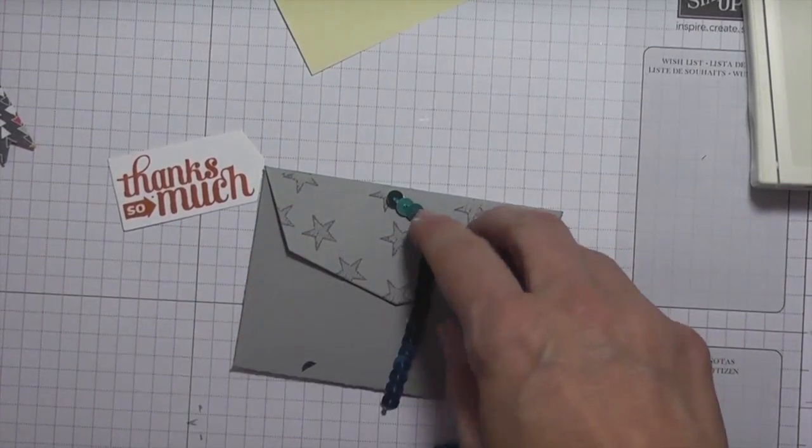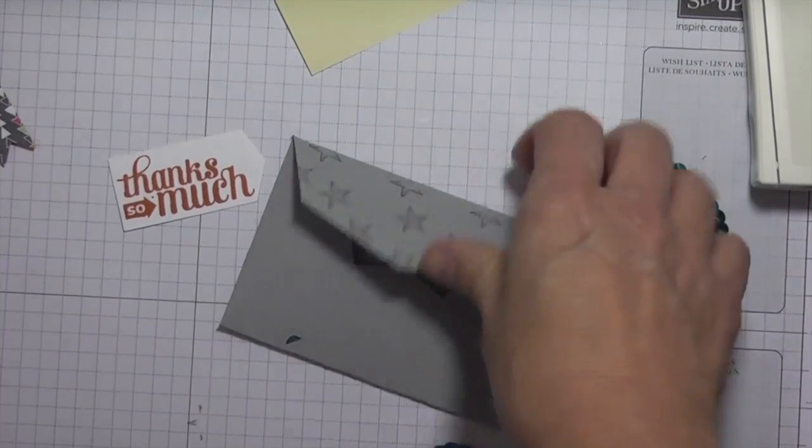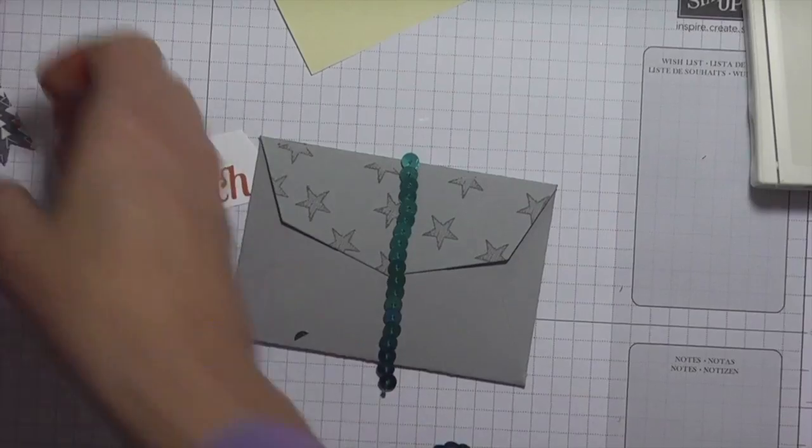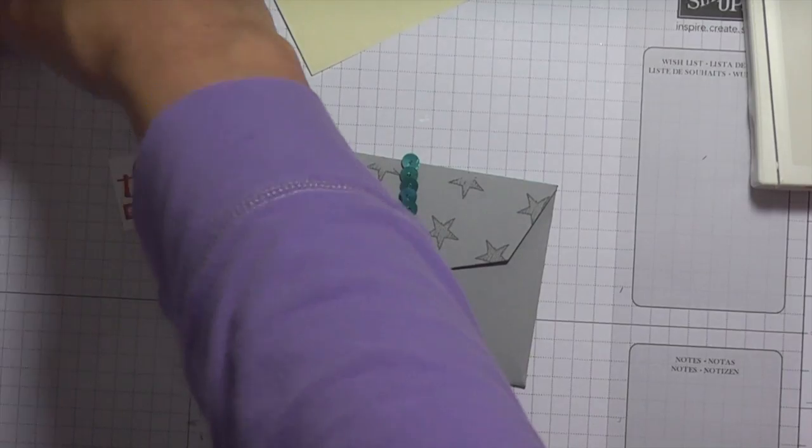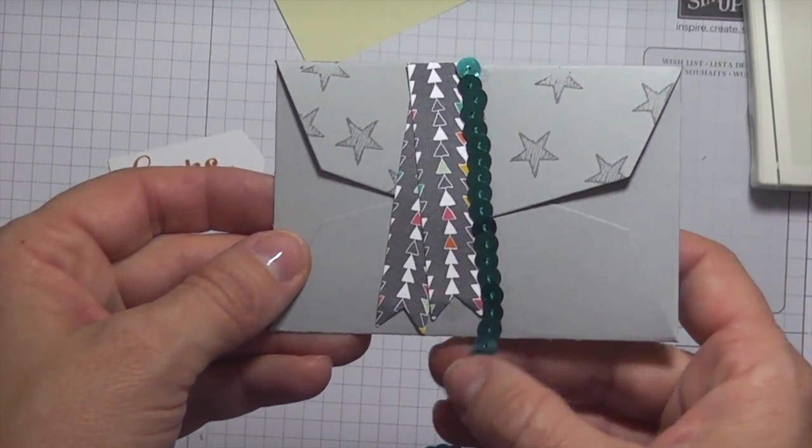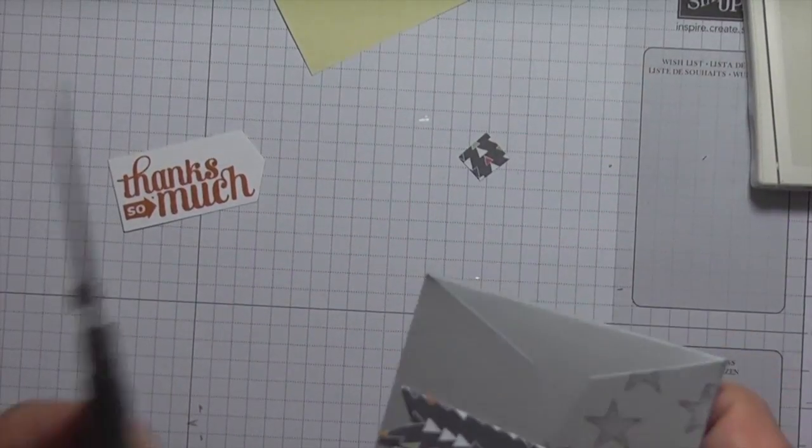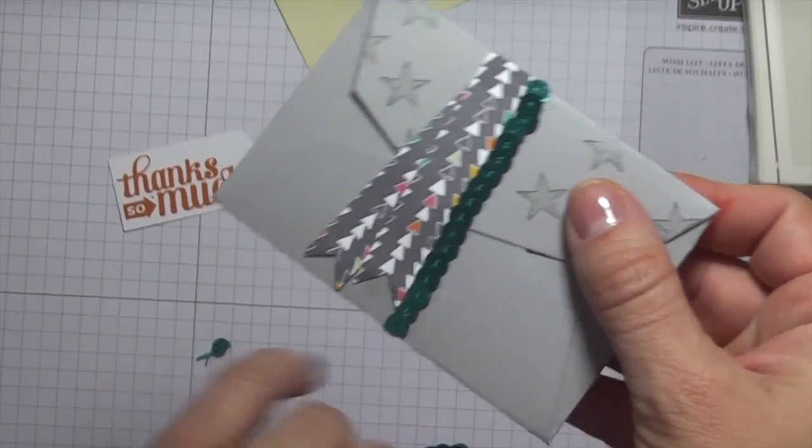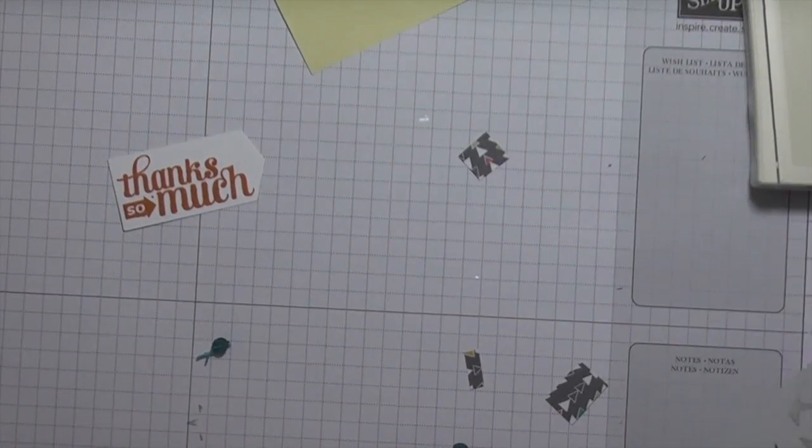I'm going to use my crystal effects and just put a thin line of glue on the front. Then I'm going to bring in my banners that I cut out from the pattern paper from the designer series. And then I'm just going to cut the excess of the sequins off.